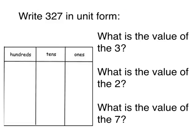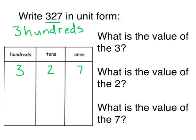We can also write numbers in unit form when we know which place each digit is in. In the number three hundred twenty-seven, the seven is in the ones place, the two is in the tens place, and the three is in the hundreds place. So, to write the number in unit form, I'm going to say how many of each place value I have: three hundreds, two tens, and seven ones.